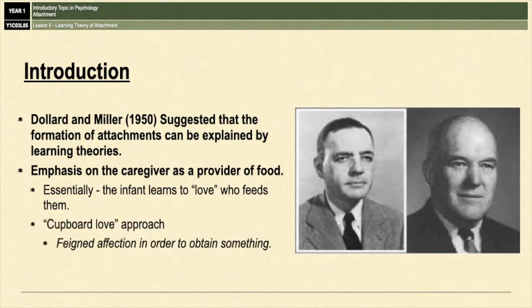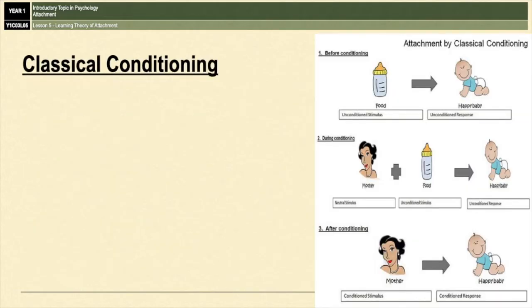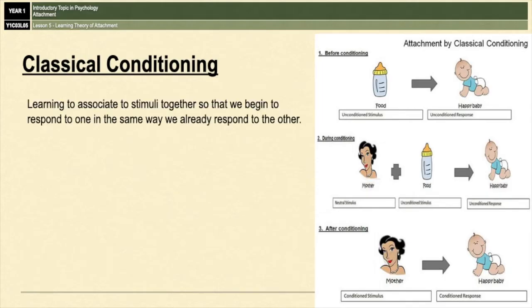As per the behaviorist approach, attachments can form via classical conditioning and operant conditioning. Classical conditioning is learning to associate stimuli together so that we begin to respond to one in the same way we already respond to another. In this case the unconditioned stimulus is food, which leads to an unconditioned response of pleasure, and the neutral stimulus is the caregiver.